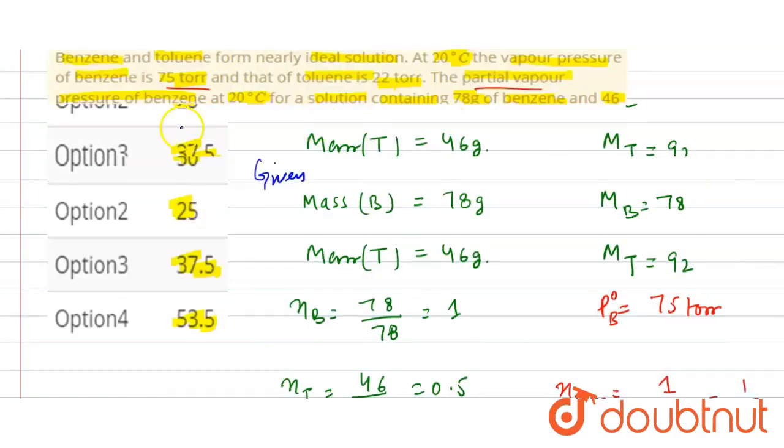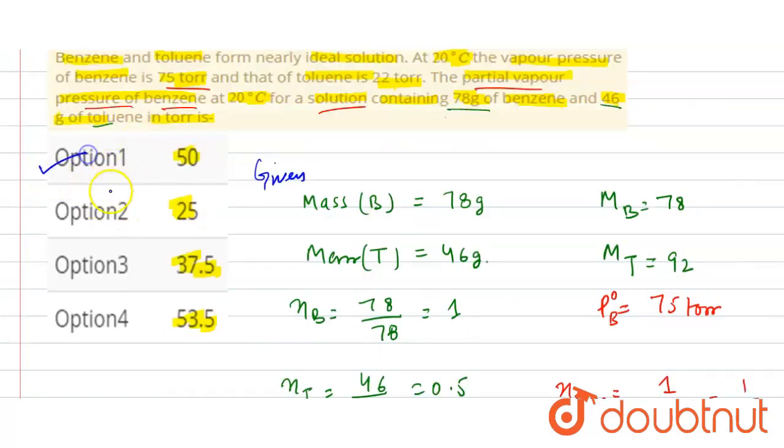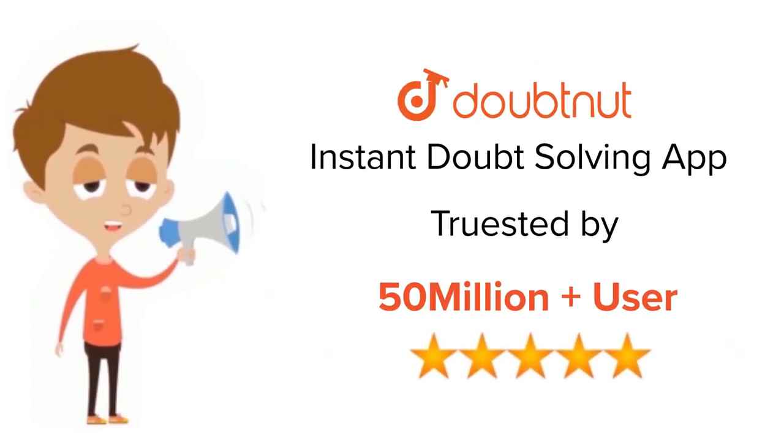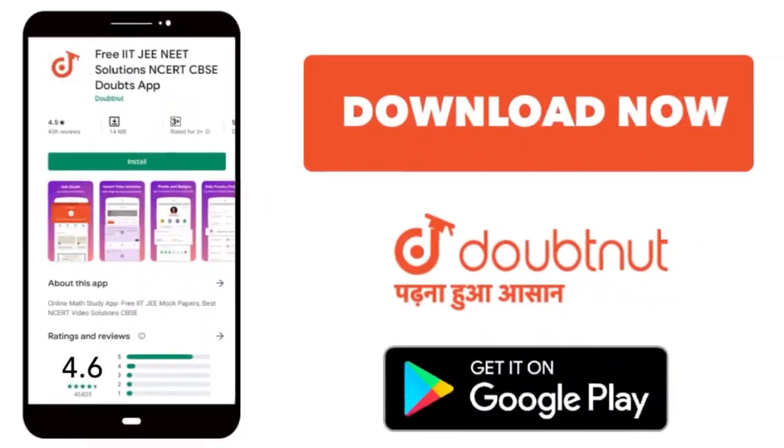For class 6th to 12th, IIT-JEE and NEET level, trusted by more than 5 crore students. Download Doubtnet app today.